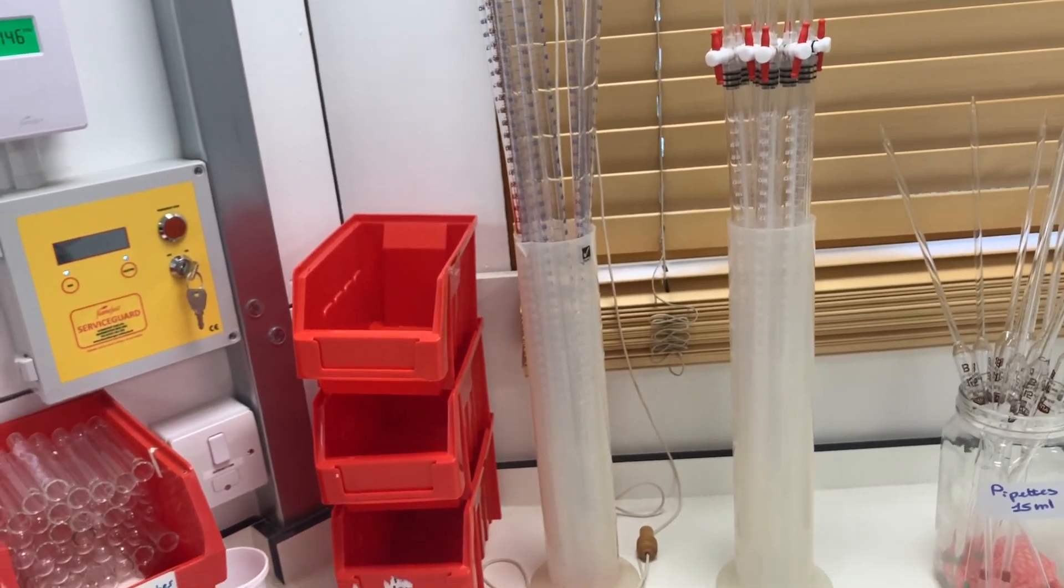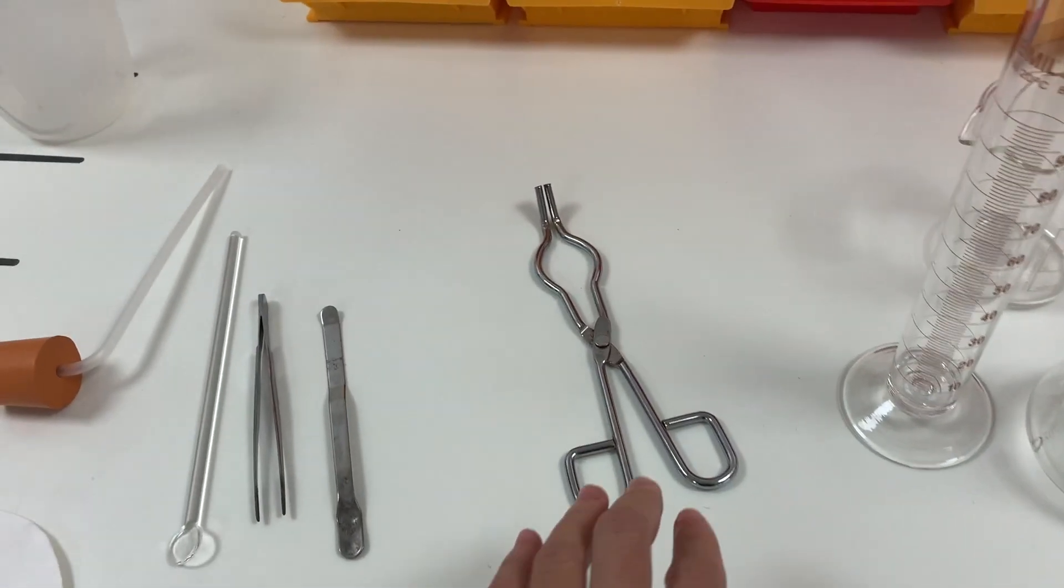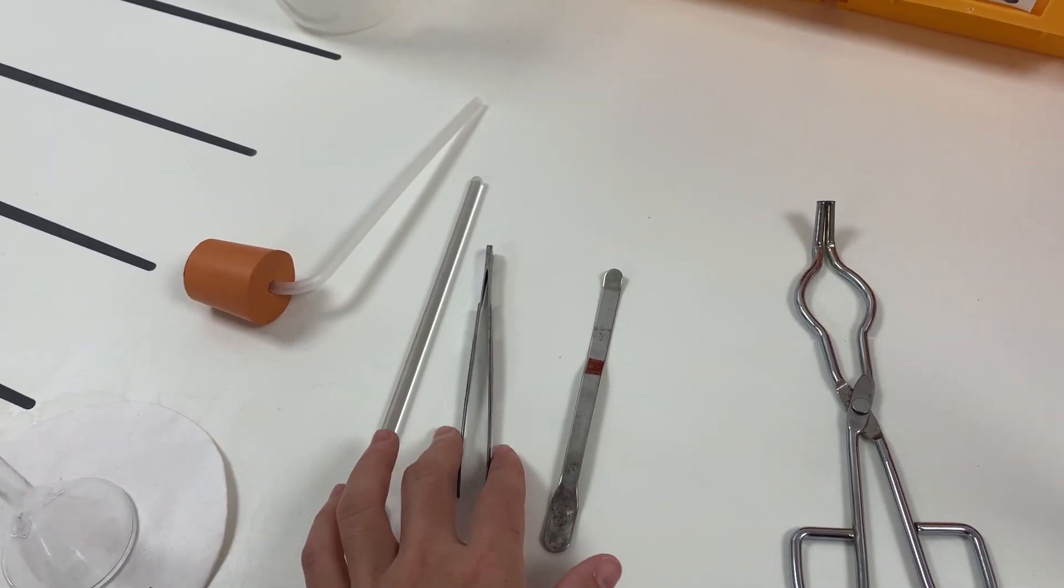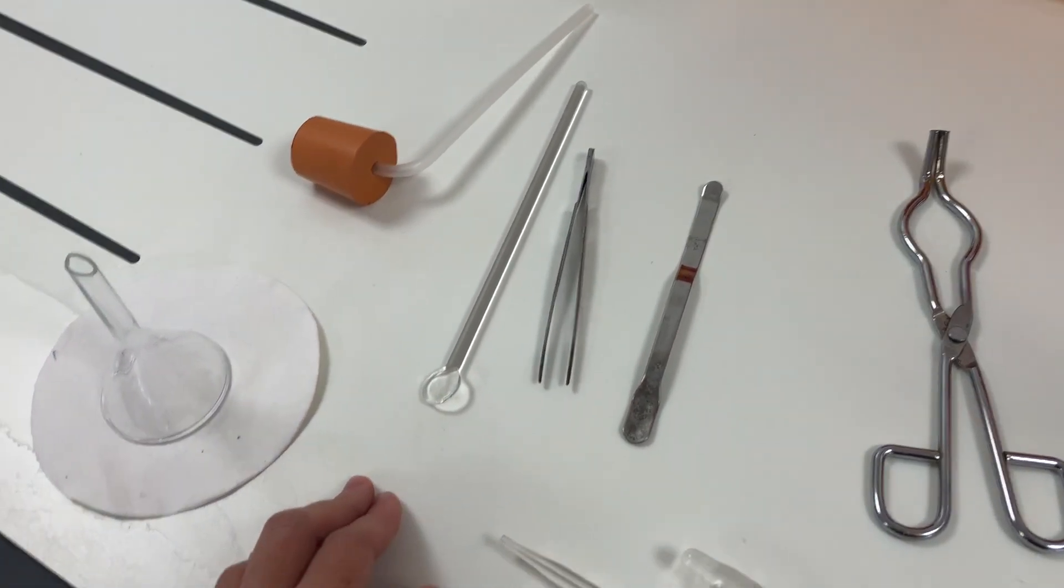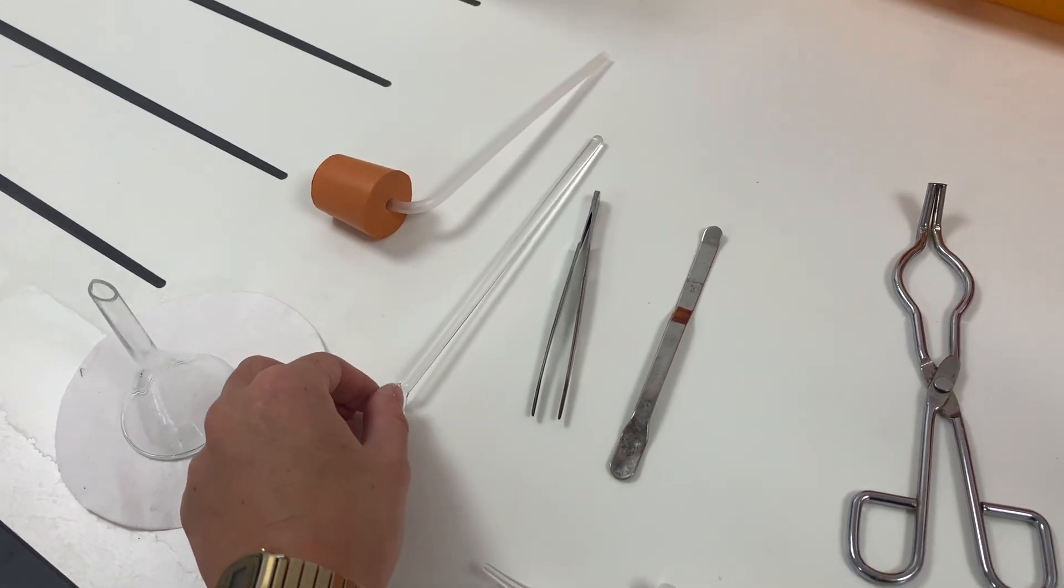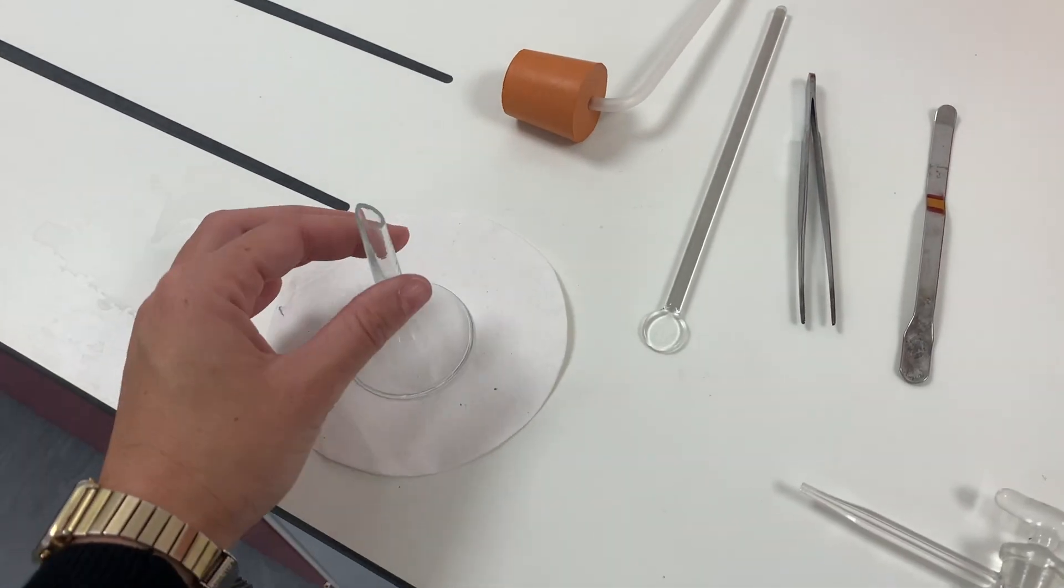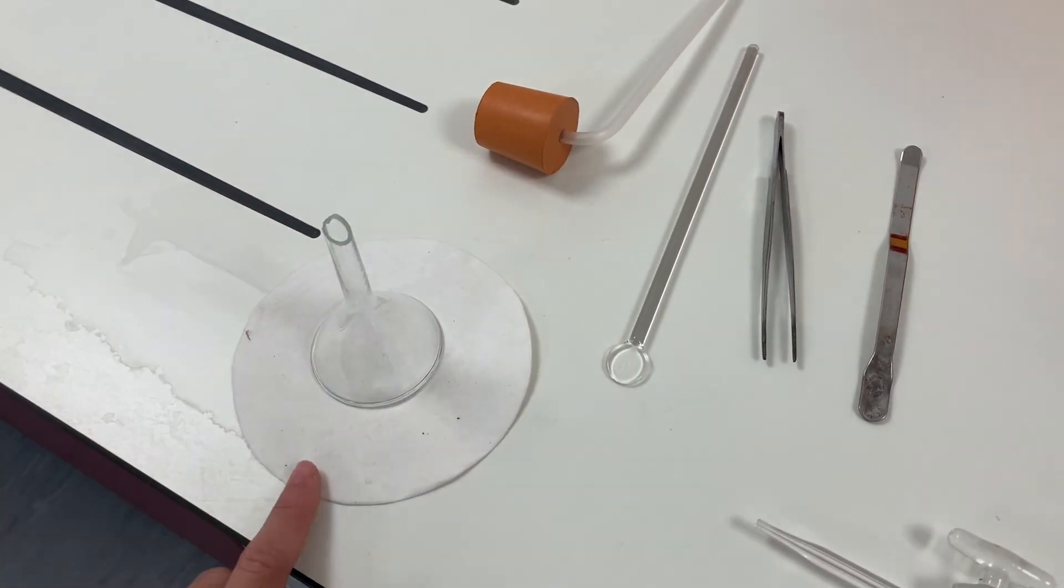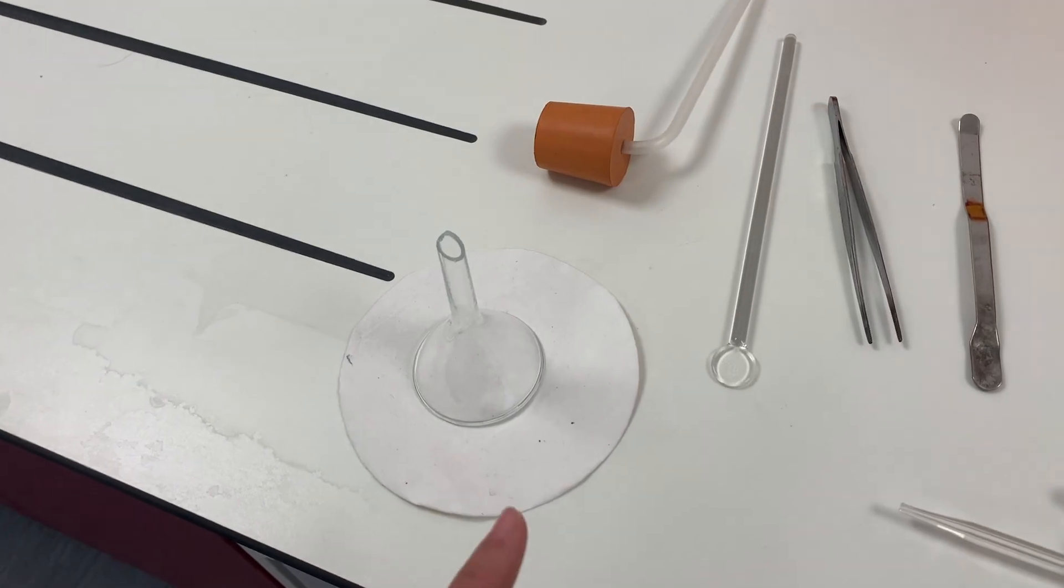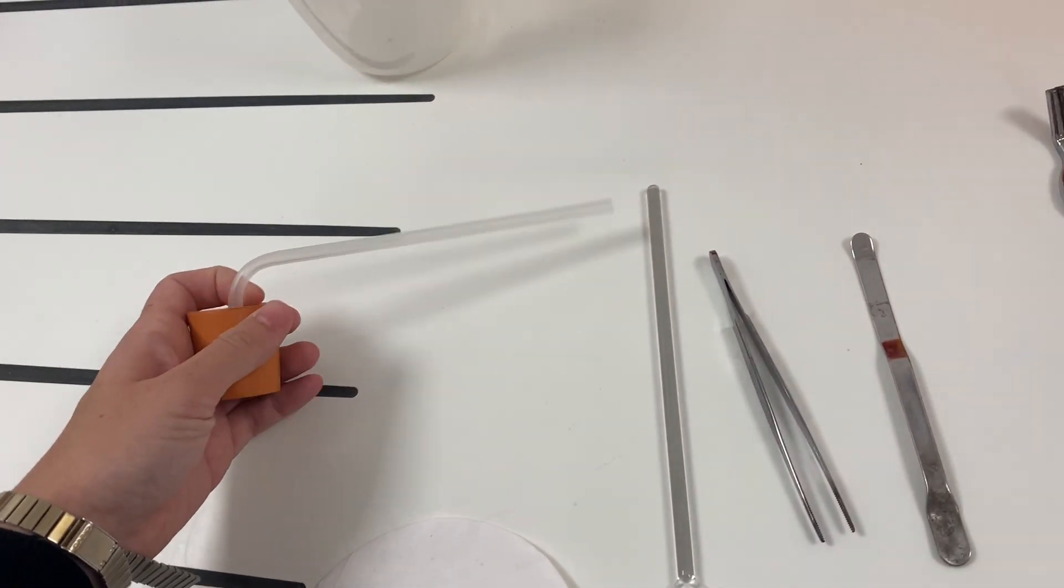We've got some tongs here, a spatula, forceps, and a glass rod that's used for stirring together solutes and solvents. This is a funnel in which you place the filter paper in order to filter solutions, and then we have a bung here together with a delivery tube.